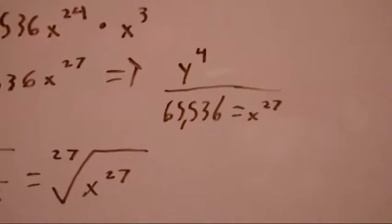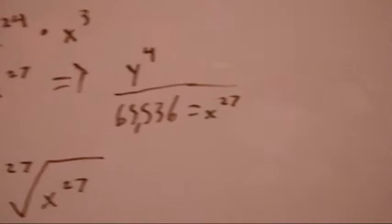Which equals y to the 4th over 65,536x to the 27th.